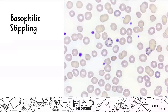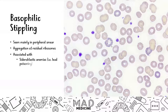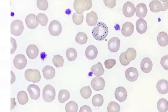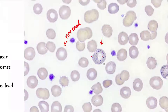The next pathologic form is basophilic stippling. Basophilic stippling usually occurs when you are looking at a peripheral smear and it represents aggregation of residual ribosomes. Normally, they should not be present — they're taken out as the red blood cell matures. In this case, they are not taken out. This is associated with sideroblastic anemias, lead poisoning, and thalassemias. The red blood cell has these little blue dots, which is the stippling — the residual ribosomes aggregating, which we can visualize with the dye.